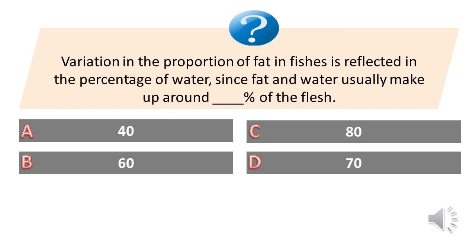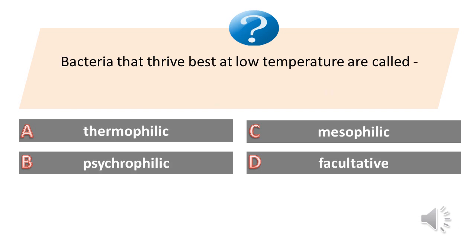Variation in the proportion of fat in fishes is reflected in the percentage of water, since fat and water usually make up around what percentage of the flesh? A. 40%. B. 60%. C. Circa 80%. D. 70%. The answer is C. Circa 80%.